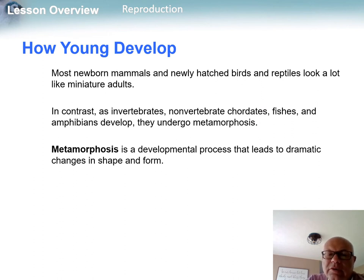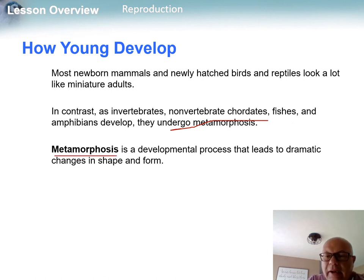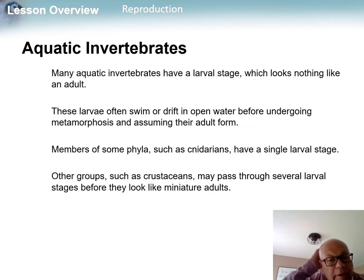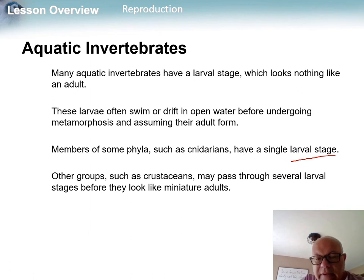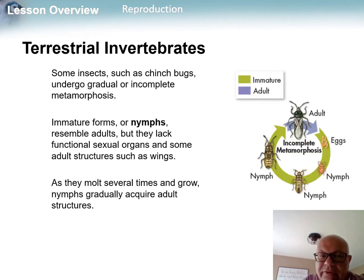Some newborns look like miniature adults, but others have to undergo changes called metamorphosis, which are controlled by hormones. Some organisms go through a larval stage — seen in many aquatic invertebrates — which may not look anything like the adult.